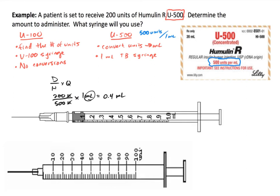Using dimensional analysis, we start with what we need to convert: 200 units. We want to convert units into mL, and U500 is 500 units per 1 mL. Taking 200 times 1 divided by 500, we again get 0.4 mL.